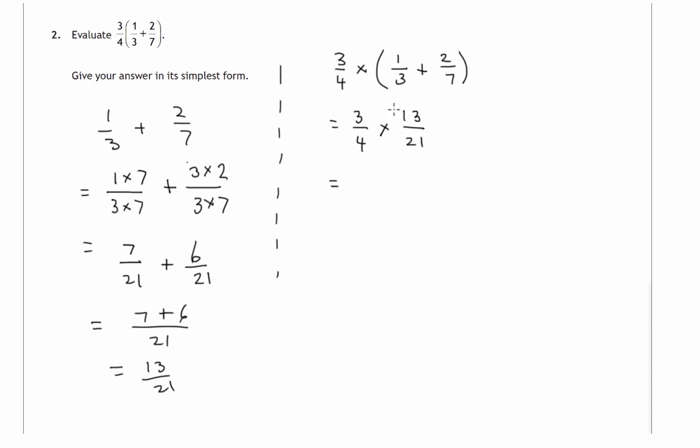Now if you recall, to multiply fractions together we multiply the top two numbers, we multiply the bottom two numbers. We need to multiply the 3 and the 13 together, we multiply the 4 and the 21 together.